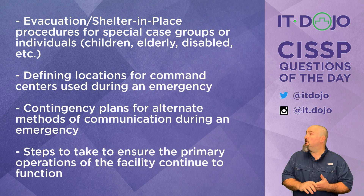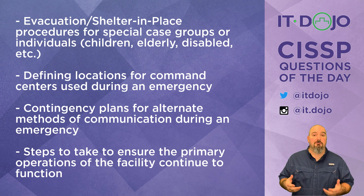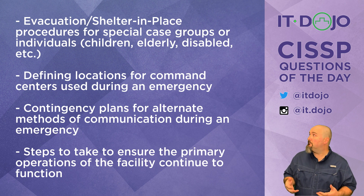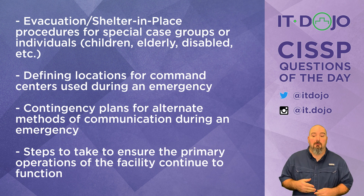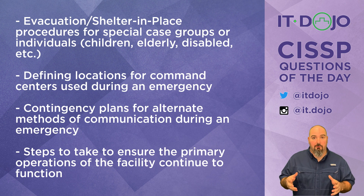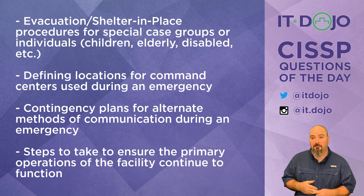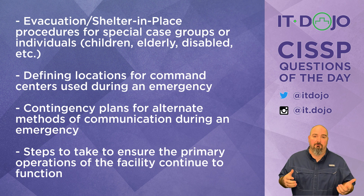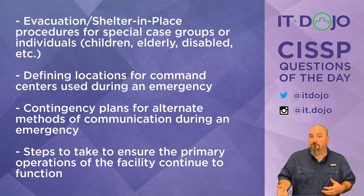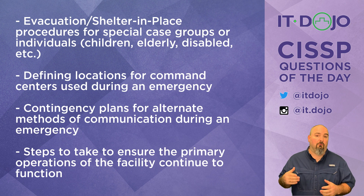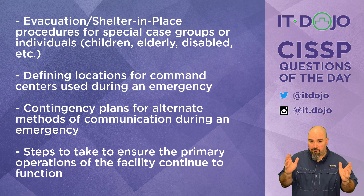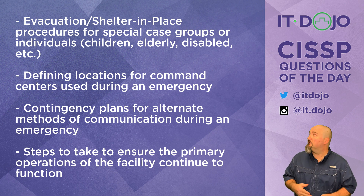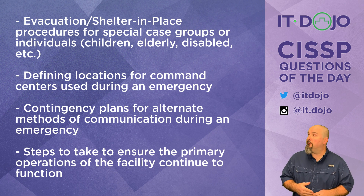The third answer choice says that you would not include contingency plans to define alternate mechanisms of communication. That should be in an occupant emergency plan. You have a primary way to announce that the plan has been activated, but what if that wasn't available? What if email or phone wasn't available? You need a backup mechanism to communicate with the people involved. So that's definitely something that should be in your OEP.